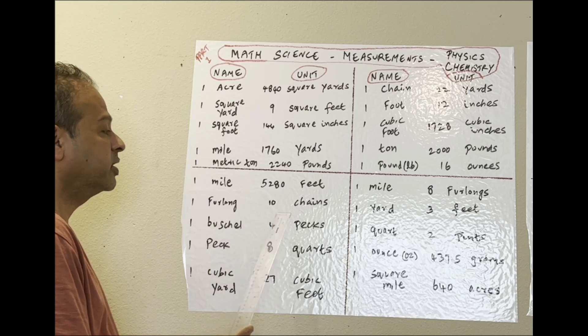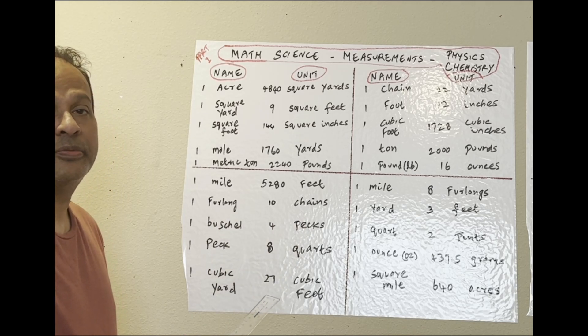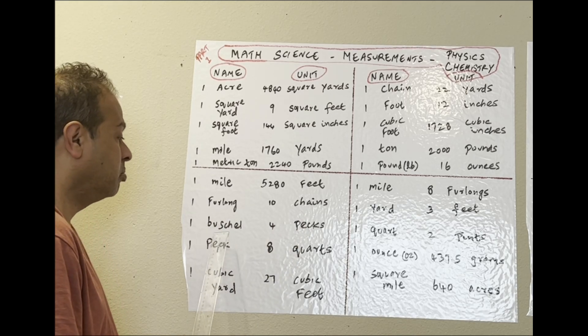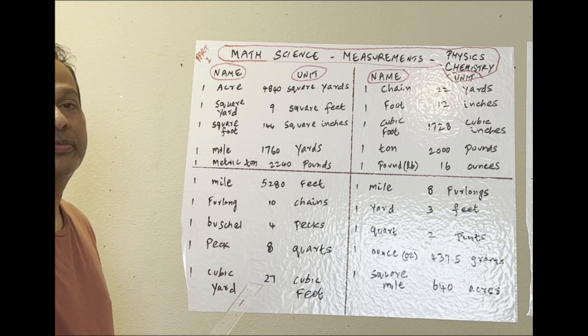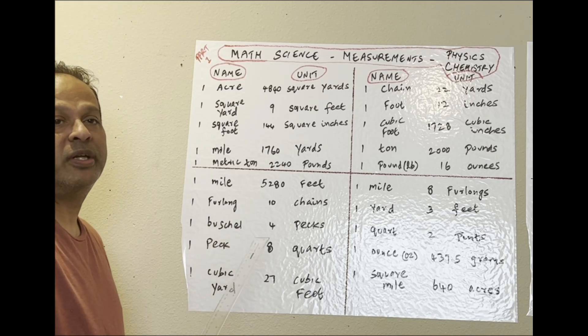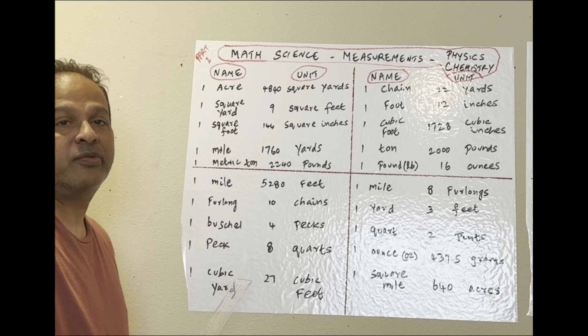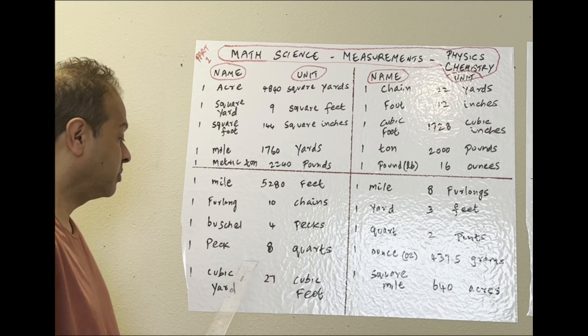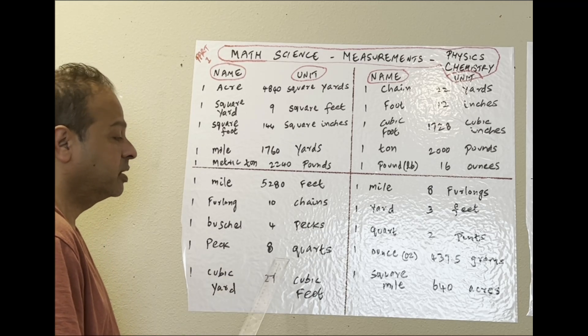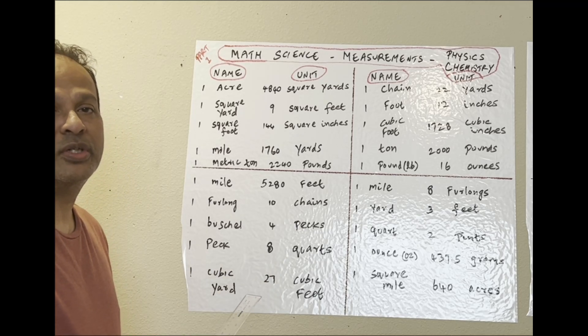One furlong is 10 chains. One bushel: four packs. These may be used in bars for drinks, measuring food items and small items. One pack: eight quarts, again used in drinks to measure the drinks.